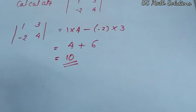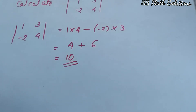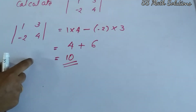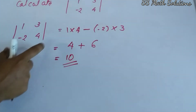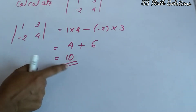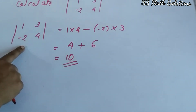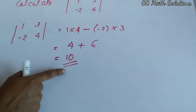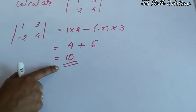So for this 2 by 2 matrix, the determinant is 10 — very easy. Every square matrix associates a real number, and this matrix is associated with the real number 10.